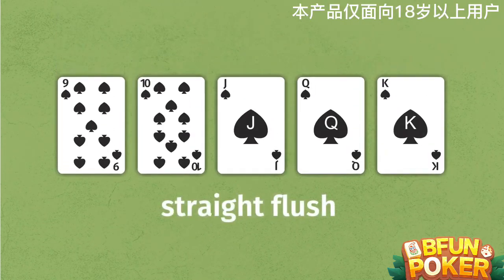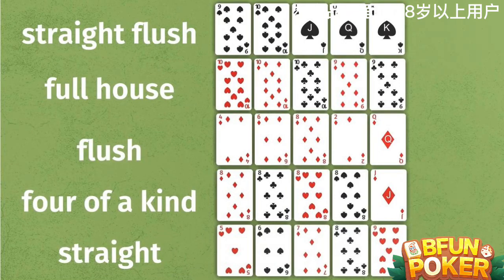Or a straight flush — five cards in ascending or descending order, all in the same suit. From high to low, they're ranked.